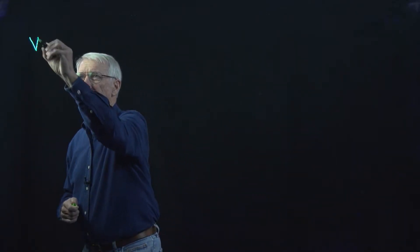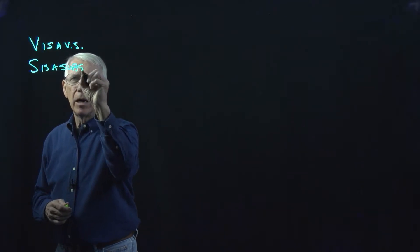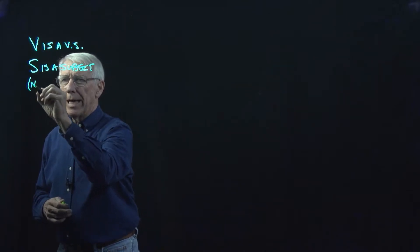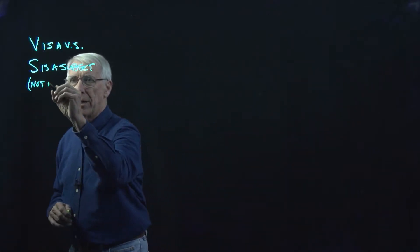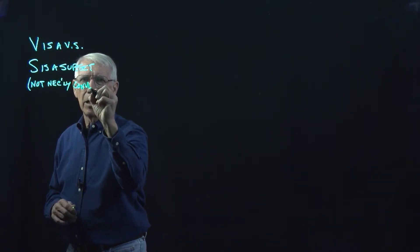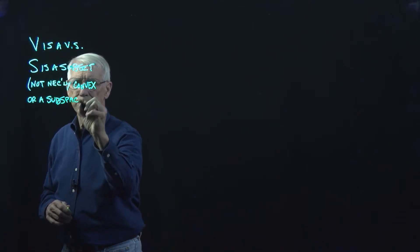This postscript is going to be about the parallel between what we've just been doing with the convex hull and convex combinations, and things we did earlier where we were talking about the span of a set and linear combinations. In both cases, we're in a vector space, so let's say that V is a vector space. And we're going to have an arbitrary set — S is a subset of the vector space, not necessarily a convex set and not necessarily a subspace.